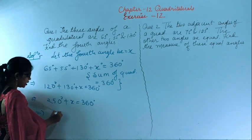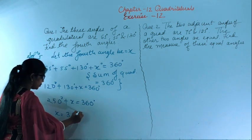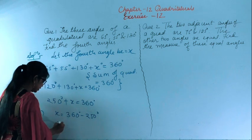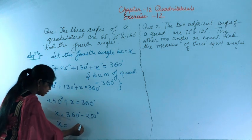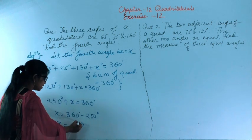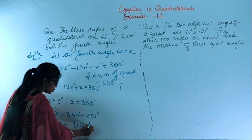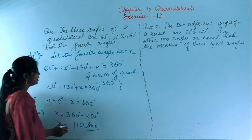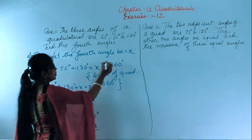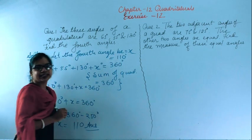So x equals 360 degrees minus 250 degrees. That gives us 0 minus 0 is 0, 6 minus 5 is 1, 3 minus 2 is 1. So x is 110 degrees. Therefore the fourth angle is 110 degrees.